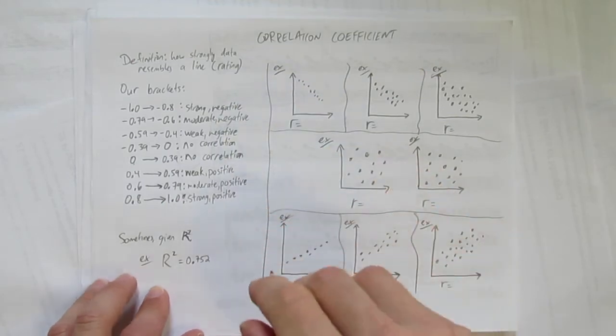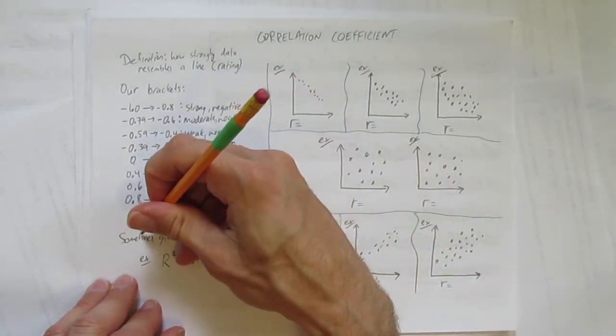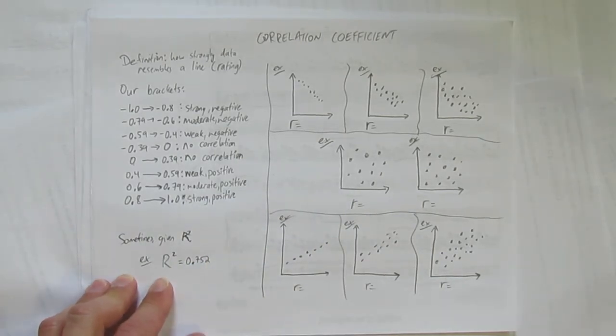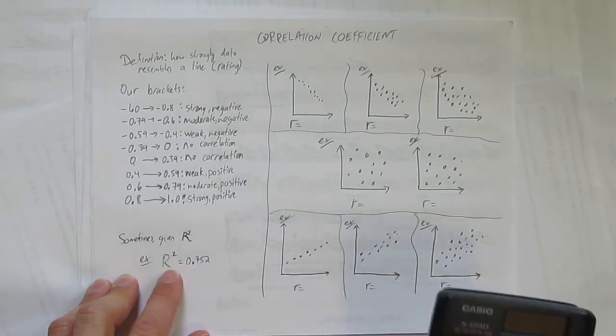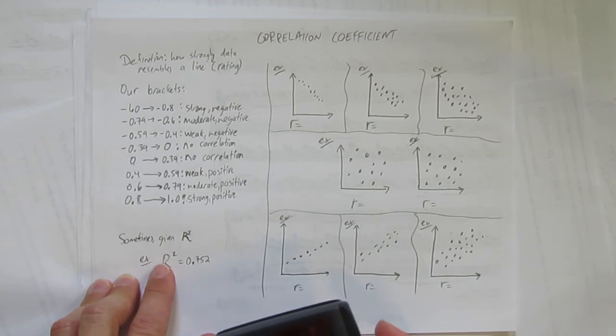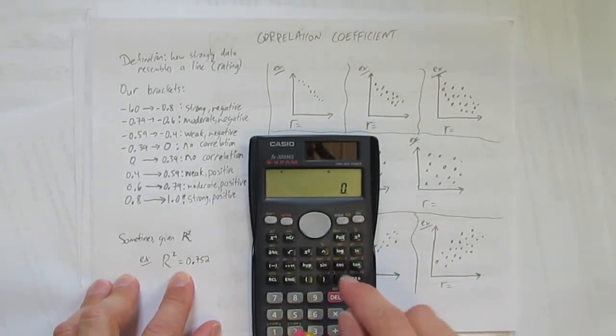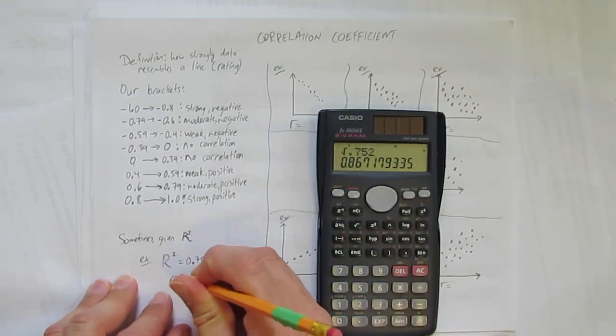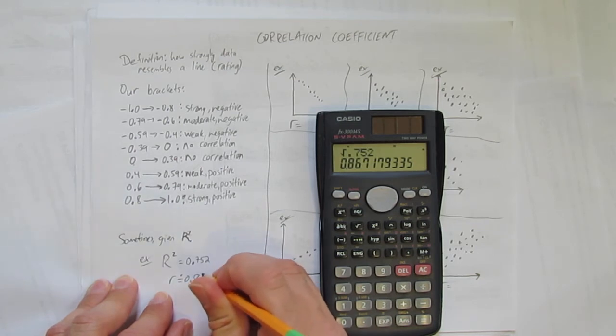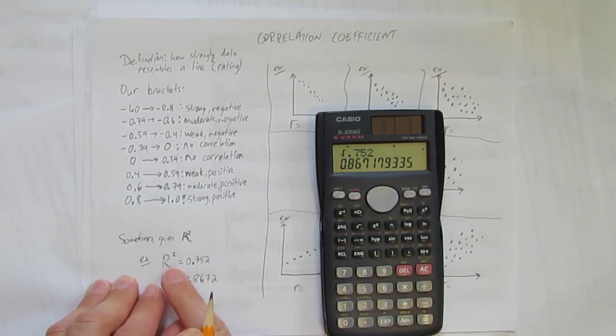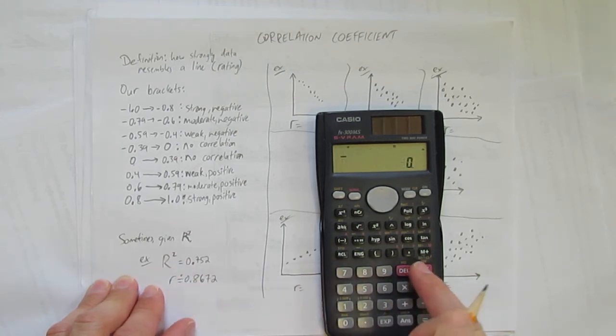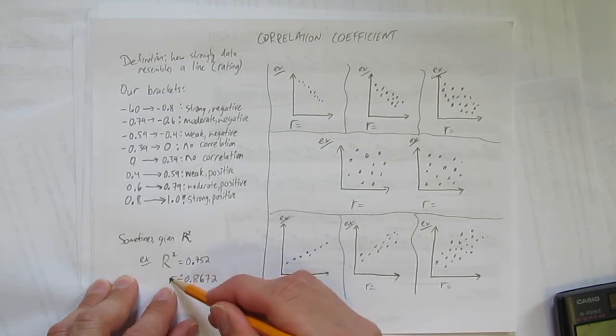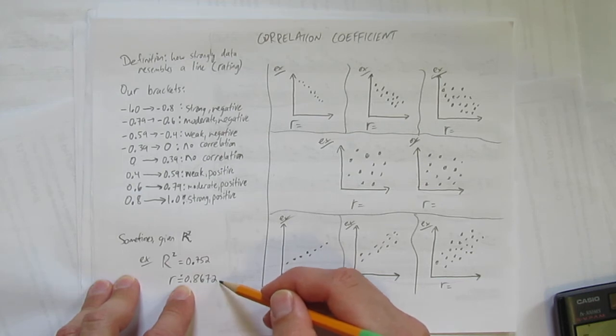I'm going to do some examples but just before I get there, sometimes a lot of software, probably the software we're going to use, sometimes you're given r squared not r and it's really important. Let's look at this example I just wrote down. I made up a number. Let's suppose you type in your data onto a spreadsheet and then you do the line of best fit and it tells you this r squared, the correlation coefficient squared is 0.752. You've got to square root that. Let's take a look at 0.752 square rooted and we'll round to 4 decimals. So r is approximately 0.8672. So it's important to remember if you're given r squared to square root it, that's your correlation coefficient. And that can be misleading. This r squared looked like it was just moderate positive when in fact when we did the square root, found out the true correlation coefficient was 0.8672, that's a strong positive correlation.